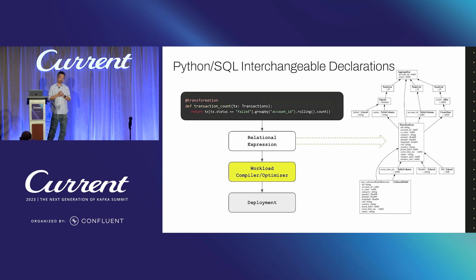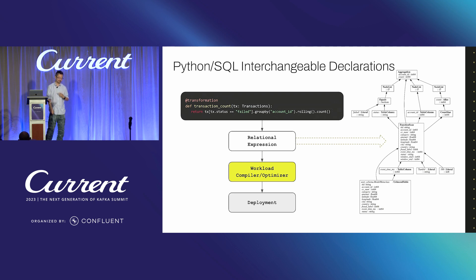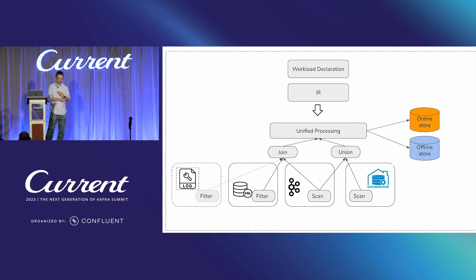The second foundational development is data contracts and data governance, which allows schema changes to be managed across different systems. Kafka has a schema registry to manage schemas for topics, and Apache Iceberg has very good schema evolution implementation. These APIs allow us to move data across different systems without breaking things when schemas change. Those are the two foundations for distributed optimizations. At a high level: once we have a workload declaration, we can translate it into intermediate representations (IRs), which feed through unified processing across microservices, transactional data stores, streaming transports, and data warehouses.